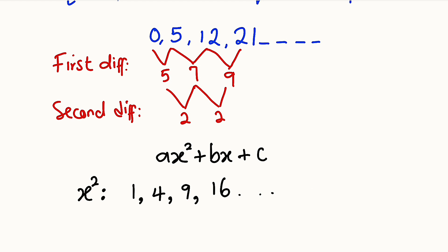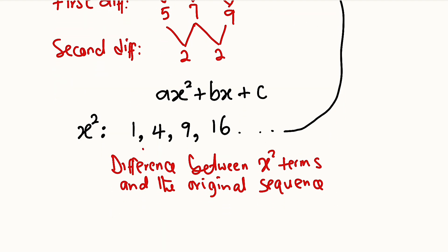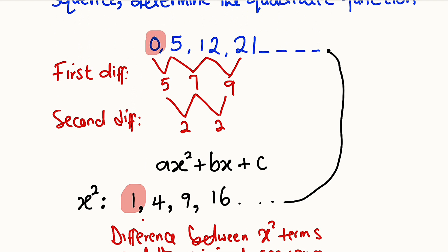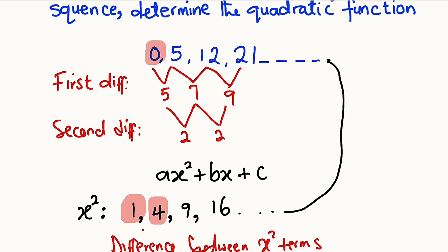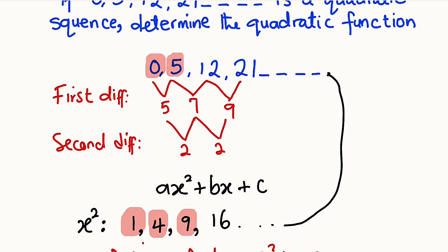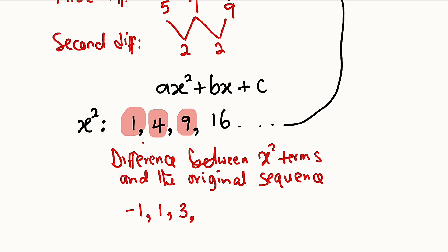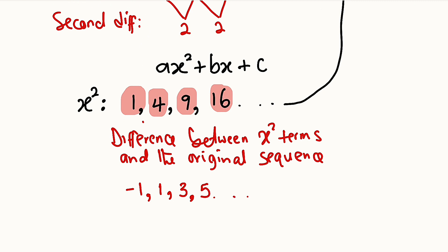Now we determine the difference between this new sequence and the original sequence. From 1, to get to 0 you subtract 1, giving −1. From 4, to get to 5 you add 1, giving 1. From 9, to get to 12 you add 3, giving 3. From 16, to get to 21 you add 5, giving 5. So the new sequence formed is −1, 1, 3, 5.